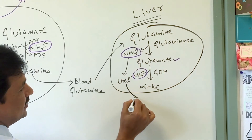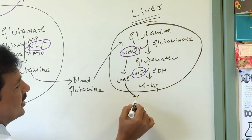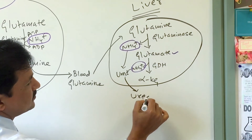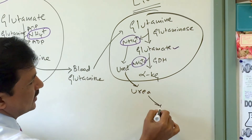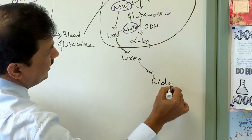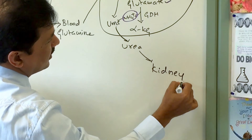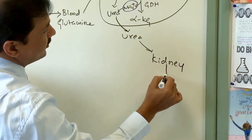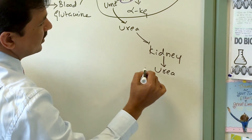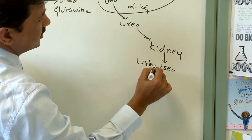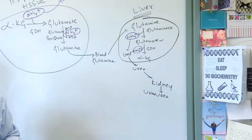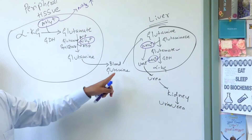Urea secreted into the blood is taken up by the kidney, which filters it into the urine. This is how urea, and ultimately excess ammonium ion nitrogen, exits the body.